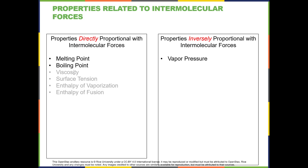In this section we're going to talk about viscosity, surface tension, enthalpy of vaporization, and enthalpy of fusion. Also interestingly, there's one property that's inversely proportional with intermolecular forces, and that is vapor pressure. Said another way, if the intermolecular forces go up, the vapor pressure actually goes down. What's really important to remember is whether the property being asked about is either directly or inversely proportional to intermolecular forces.